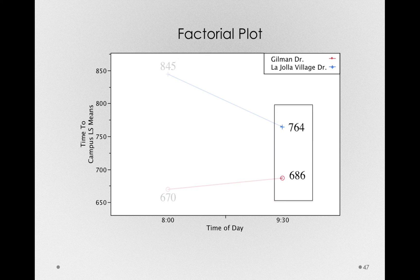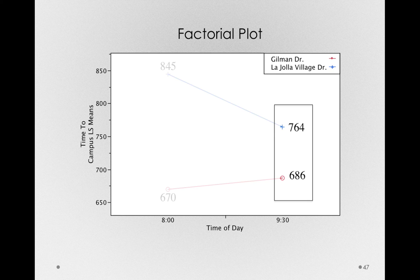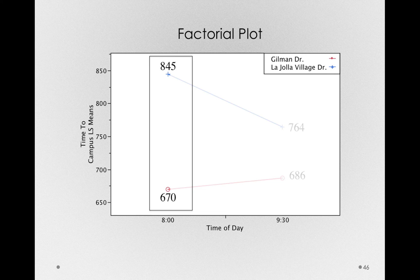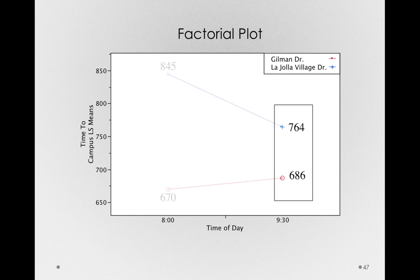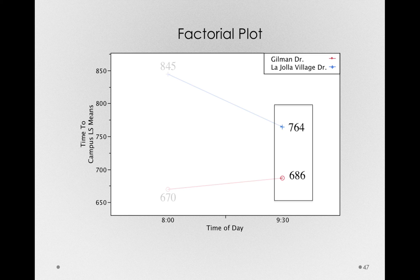But if we're going at 9:30, well, the effect of route is actually smaller. That is, the difference between 764 and 686 is actually less than the difference between 845 and 670. So, the effect of route depends on which level of time of day I'm in, in the same way that the effect of time of day depends on which route I'm considering.